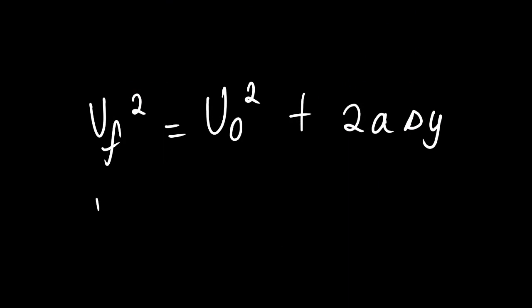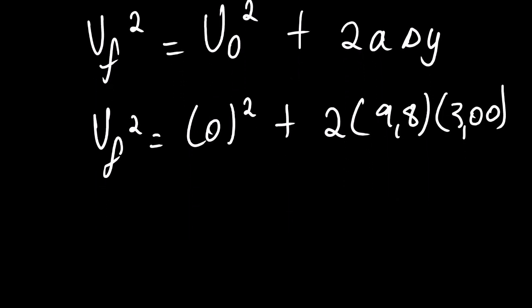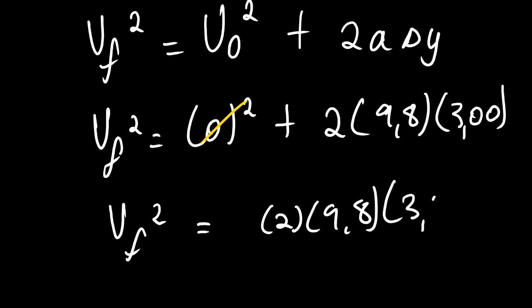This is our equation. We have Vf² equals Vi, which is 0, plus 2 times 9.8 times 3.00. 0 squared is the same as 0, so this will disappear. We have Vf² equals 2 multiplied by 9.8 multiplied by 3.00.